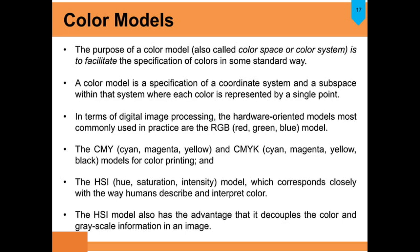In digital image processing, the hardware-oriented models most commonly used include RGB, CMY (cyan, magenta, yellow), CMYK (cyan, magenta, yellow, black — used for printing), and HSI (hue, saturation, intensity). The CMY model is for printing; generally hardware-oriented models use RGB. For humans to describe or interpret color, we use HSI. HSI also has the advantage that it decouples the color and grayscale information in the image.